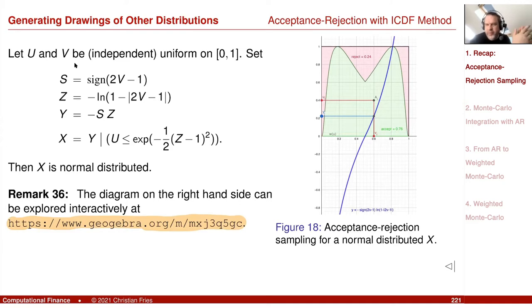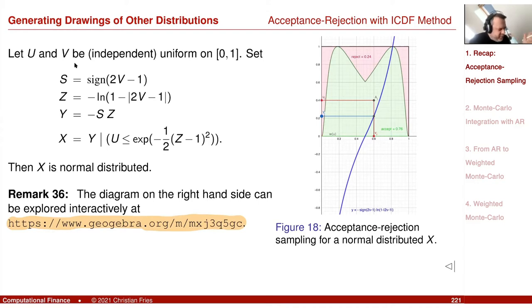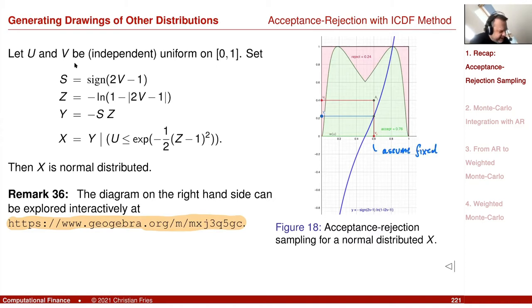If we go back to where we started — the Monte Carlo method — what we actually need is the sequence to calculate the Monte Carlo integral. Instead of throwing points away, maybe we can be more clever. Consider a fixed value of V: you will always get the same point.